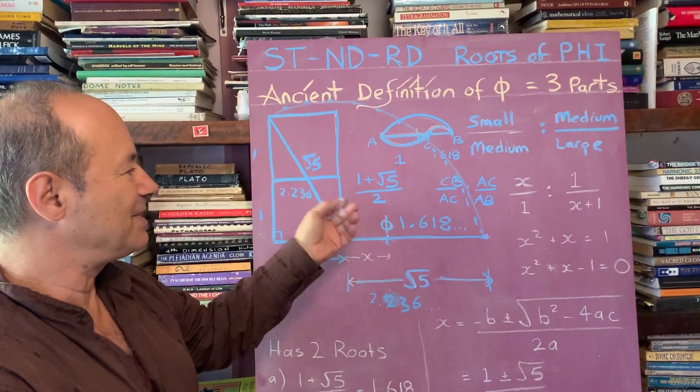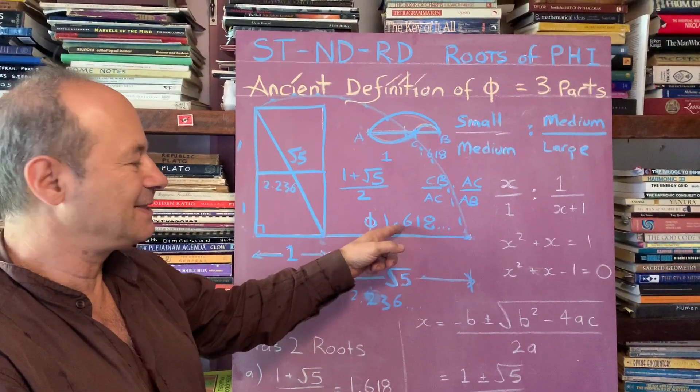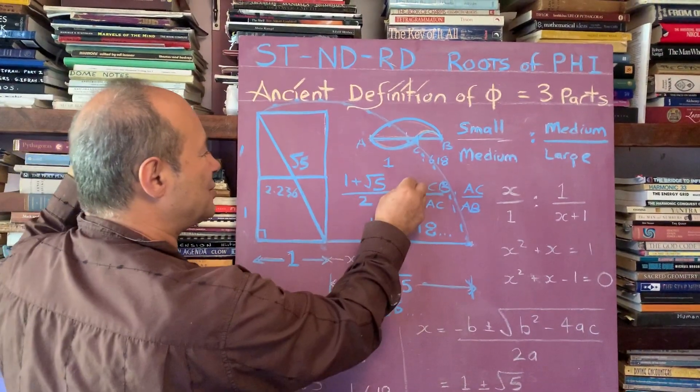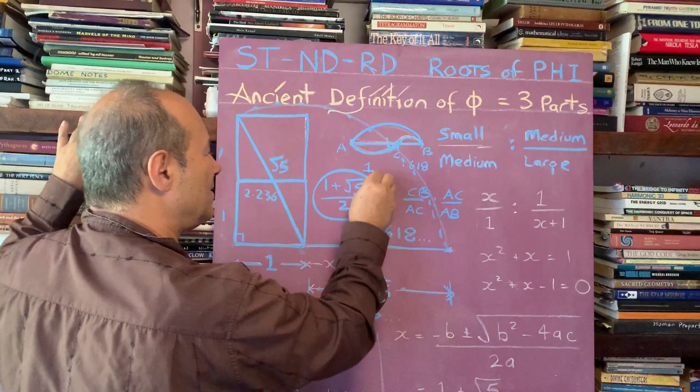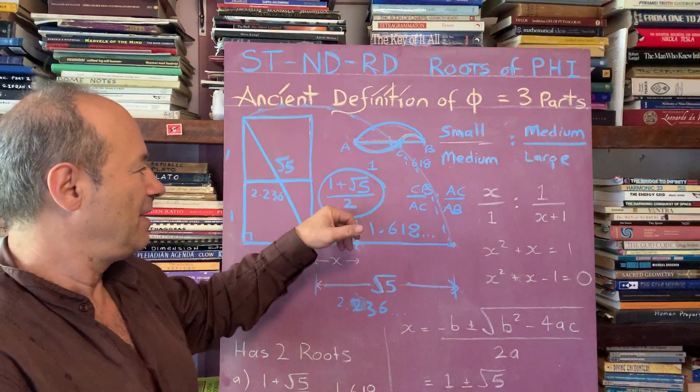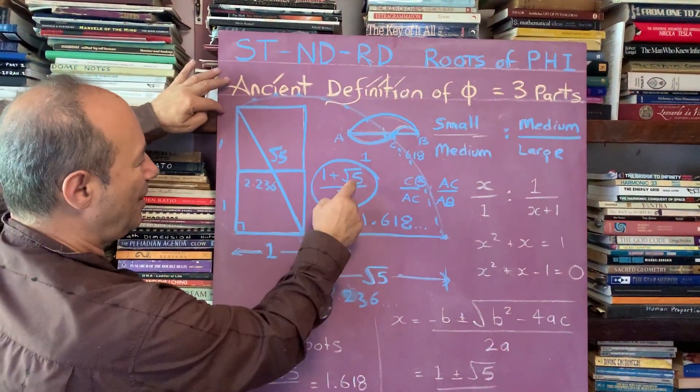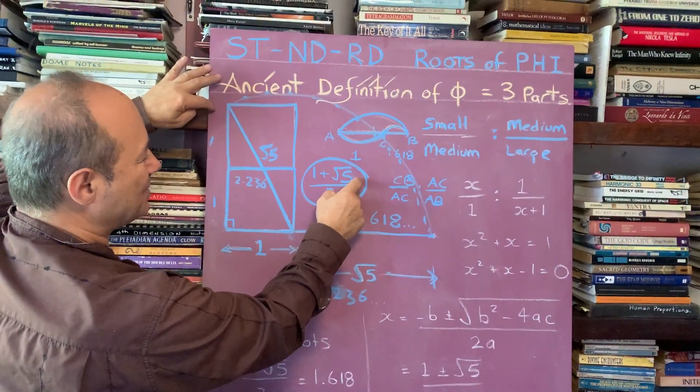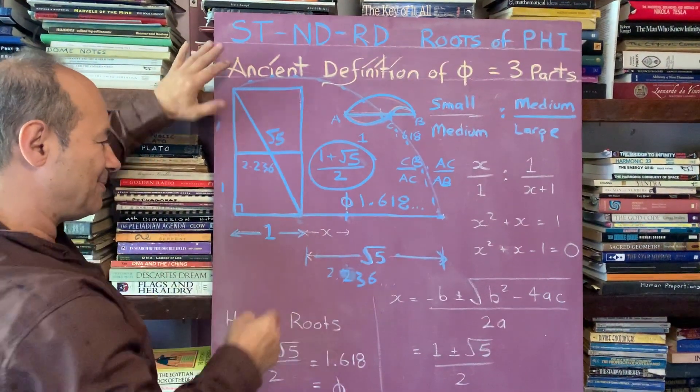To establish how do we get 1.618, essentially we do have to know this formula for the golden ratio: one plus the root five divided by two. I've shown you the mystery of how we express root five - well it's a diagonal of the double square.